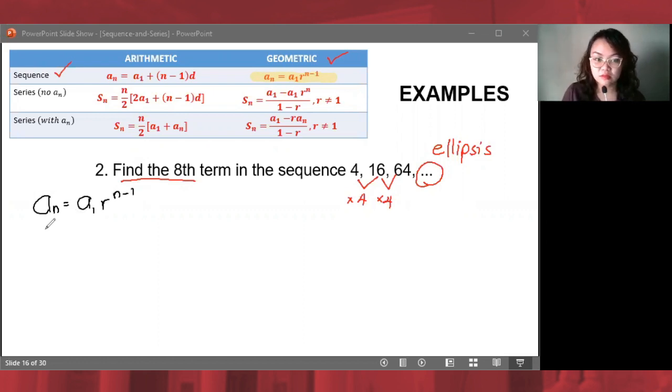And a sub n would now be a sub 8 equals a sub 1. A sub 1, the first term is 4. So, we have 4 times r. What's r? Ano yung minumultiply natin? It's also 4. So, 4 raised to n. And n here is 8. Because we're looking for the eighth term. So, that's the nth term. 8 minus 1. So, we have a sub 8 is equal to 4 times 4 raised to 7.